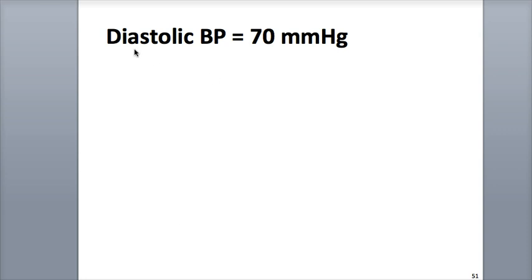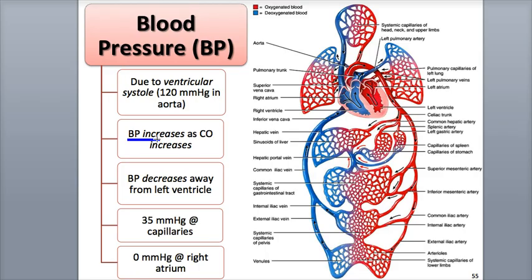The diastolic blood pressure, which is the lowest arterial blood pressure during ventricular relaxation, or diastole, is around 70 millimeters of mercury. Blood pressure increases as cardiac output increases, but decreases gradually as blood flows through the systemic arteries away from the left ventricle. By the time blood reaches the capillaries, the pressure is around 35 millimeters of mercury. When blood flows through the capillary bed and reaches the venules, blood pressure is around 16 millimeters of mercury.